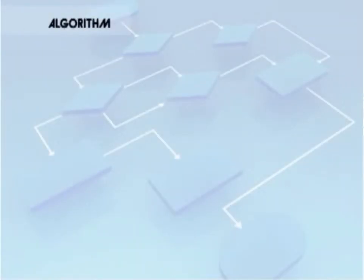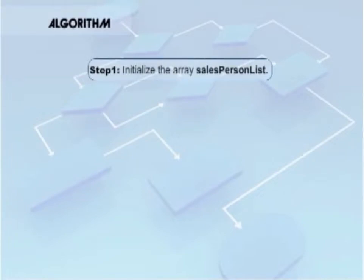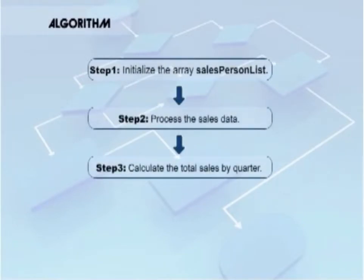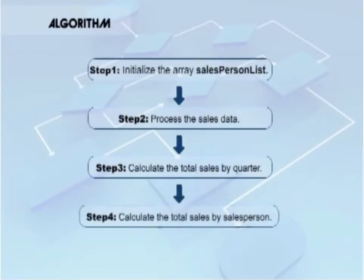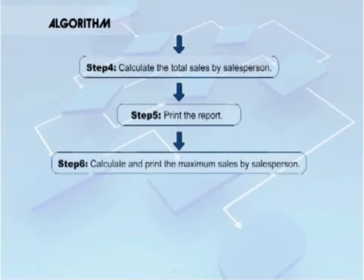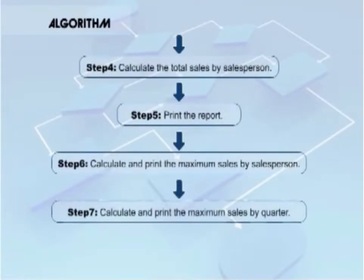The previous discussion translates into the following algorithm: initialize the array salesperson list; process the sales data; calculate the total sales by quarter; calculate the total sales by salesperson; print the report; calculate and print the maximum sales by salesperson; and calculate and print the maximum sales by quarter.